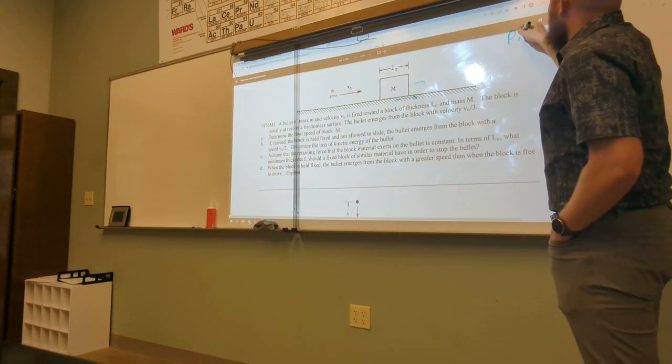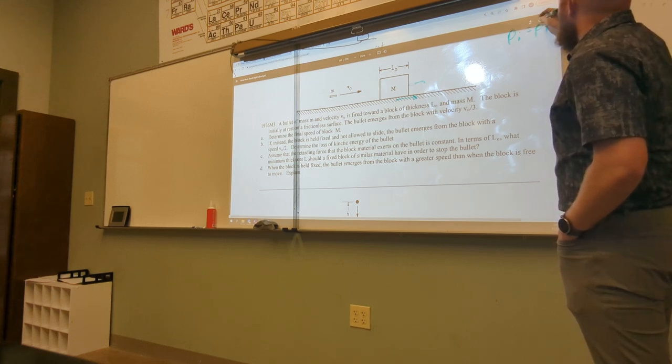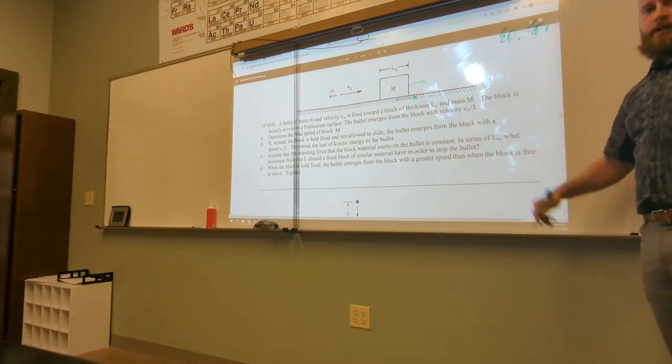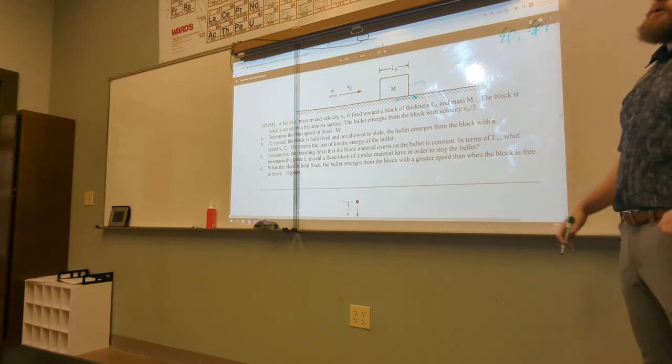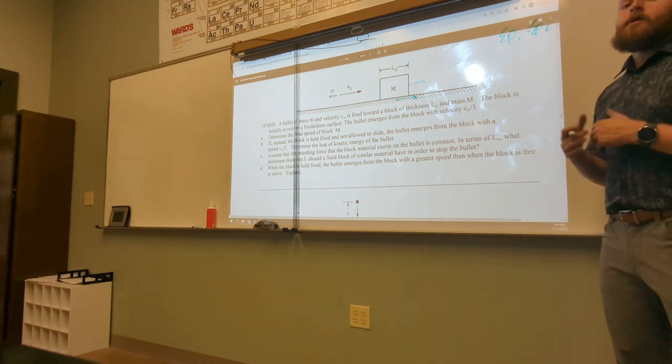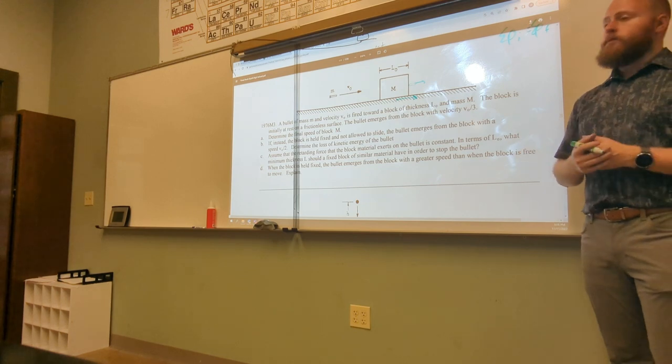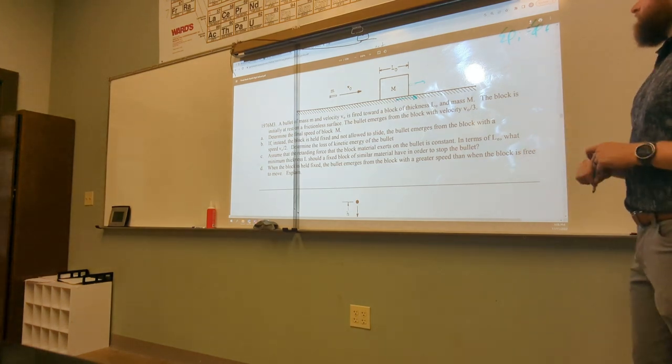So I'm just going to start with PI equals PF. It is really helpful to start with something like this, especially with that sum there, just signifying that you're using the conservation of momentum. That is very frequently a point, so it is important to write that down.